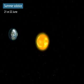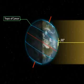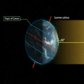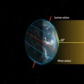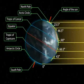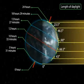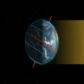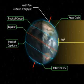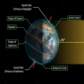Summer solstice. On the 21st or 22nd of June, the overhead Sun is over the Tropic of Cancer. It receives the largest amount of solar radiation. At this time, the Northern Hemisphere is in the summer solstice, while the Southern Hemisphere is in the winter solstice. The angle of the Sun decreases towards the poles. On this day, the length of daytime in the Northern Hemisphere is the longest in the year, while that of the Southern Hemisphere is the shortest. There are 24 hours of daylight at the Arctic Circle and 24 hours of darkness at the Antarctic Circle.